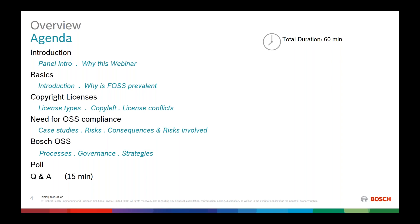We will go into basics, then copyright licenses. License types, copyleft, and license conflicts will be some of the topics addressed. Then we will cover the need for OSS compliance, where we'll look into case studies, some risks, and consequences involved in non-compliance. Finally, we will have Bosch OSS, presenting key learnings and how processes are established within our organization, touching upon strategies and governance. After that, we will have a quick poll and then a Q&A.